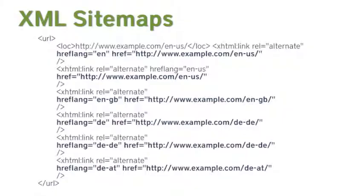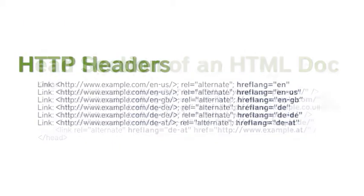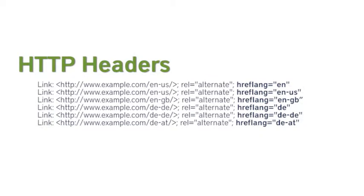There are three different ways you can implement the hreflang tags, and none of them have any technical preferences over the other. It's basically whichever ones your development team can do the easiest. You can either put them in XML sitemaps, the head section of the HTML document, or in the HTTP headers.